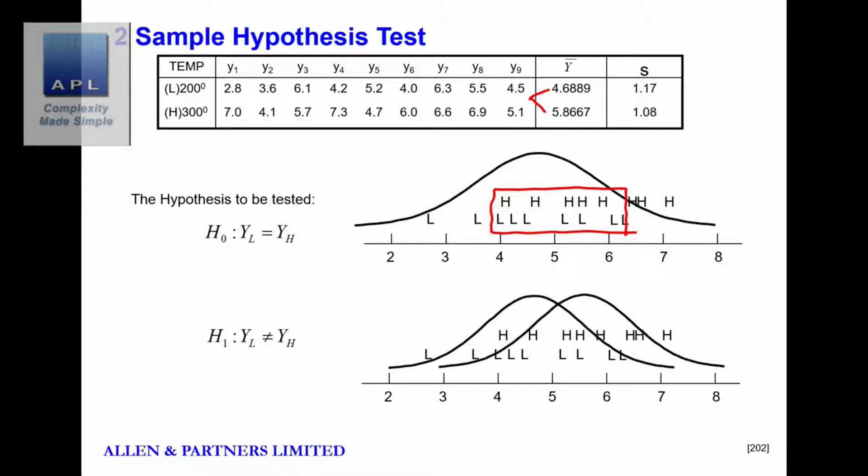And therefore any difference that we're seeing in the mean here is just luck, it's just noise. But of course there's also the chance that it isn't luck. Maybe what we've done by changing the temperature, we've created two separate means, 4.6 and 5.8, and we've created a genuine shift in the process.